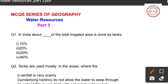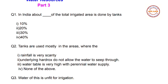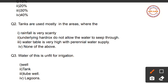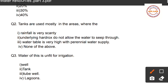Question number one: In India, about how much of the total irrigated area is done by tanks? First option: 10%, second option: 20%, third option: 30%, fourth option: 40%. The answer is 10% of the total irrigated area in India is irrigated by tanks.